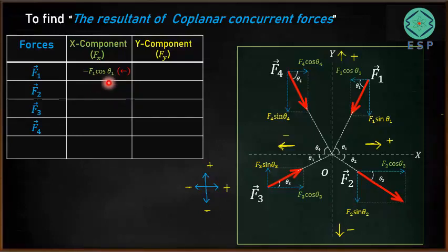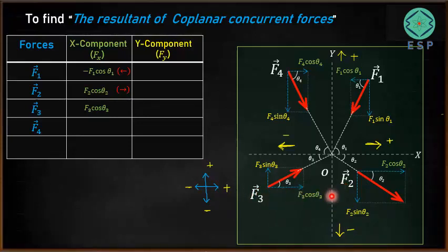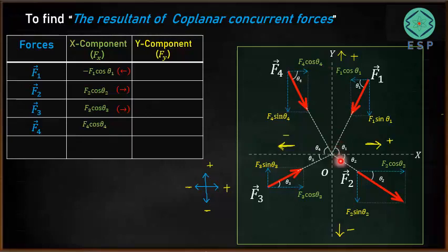F1 cos theta 1 is acting towards the negative direction of the X axis, so it is taken as negative. F2 cos theta 2 is acting towards the right — towards the positive direction of the X axis — so it is taken as positive. F3 cos theta 3 is also towards the right, so it is positive. F4 cos theta 4 is also acting in the positive direction of the X axis, so it is positive. Only F1 cos theta 1 is negative; the remaining are all positive.